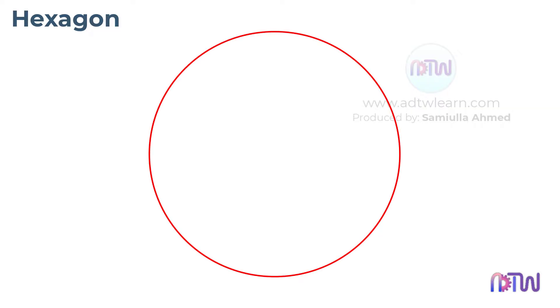Suppose there is a circle of unknown radius, and we need to inscribe a hexagon inside this circle.